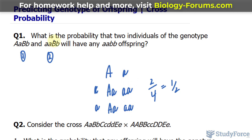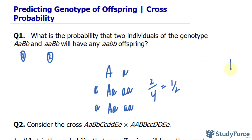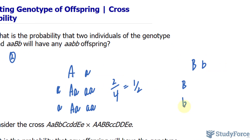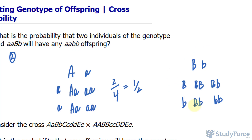If we do the same thing for the other gene, where we have a heterozygous situation in both cases, doing this monohybrid cross gives us two capital B's, capital B little b, capital B little b, and two little b's. So the probability that the offspring will be homozygous recessive for this gene is one in four.